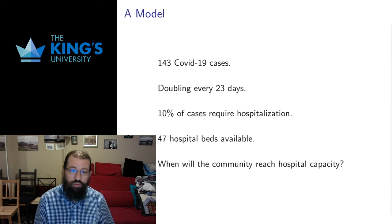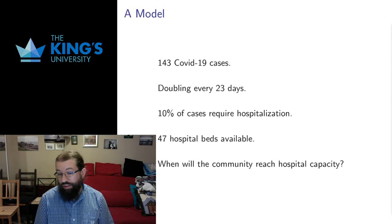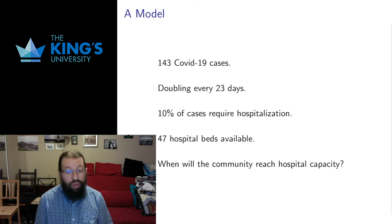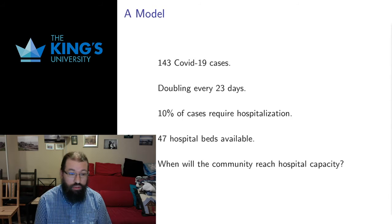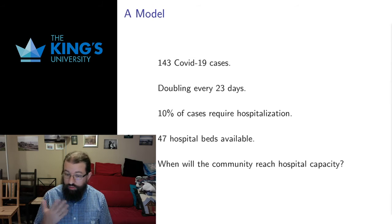This was recorded in the summer of 2020 in the midst of the COVID-19 pandemic, so that seems like the most tangible and practical thing that people are actually calculating about all the time. Let's talk about a model of virus cases. In a particular community, there are currently 143 active cases and the number of active cases is currently doubling every 23 days. In this community, 10% of those cases require hospitalization and there are 47 hospital beds available. So the important question is: if nothing changes, if the doubling period stays the same, when will the community reach hospital capacity? Let's translate these statements into mathematics.